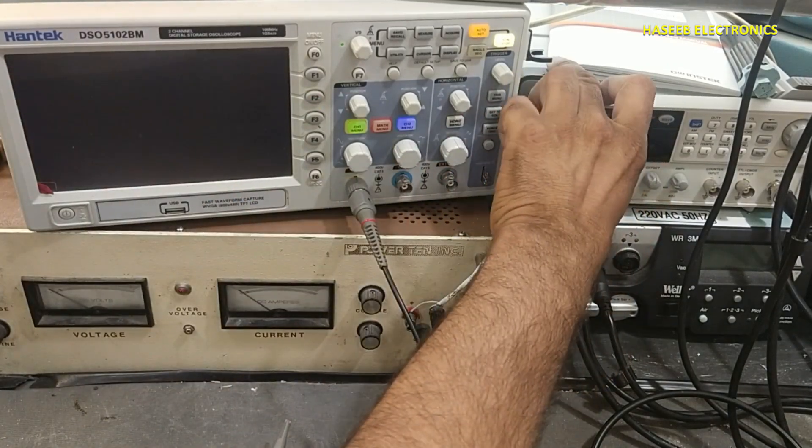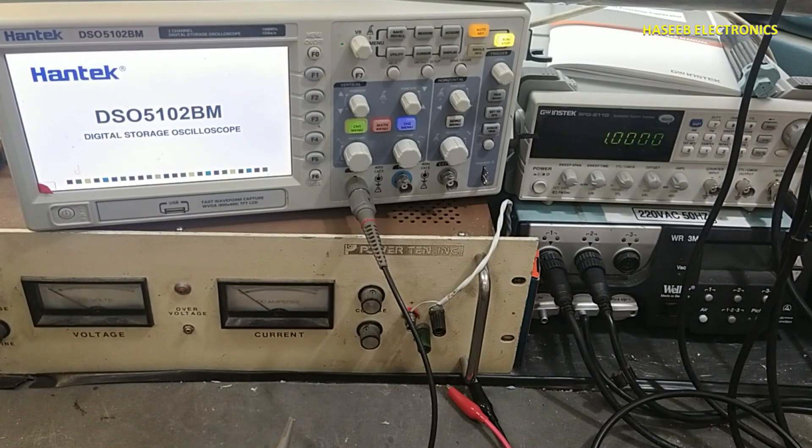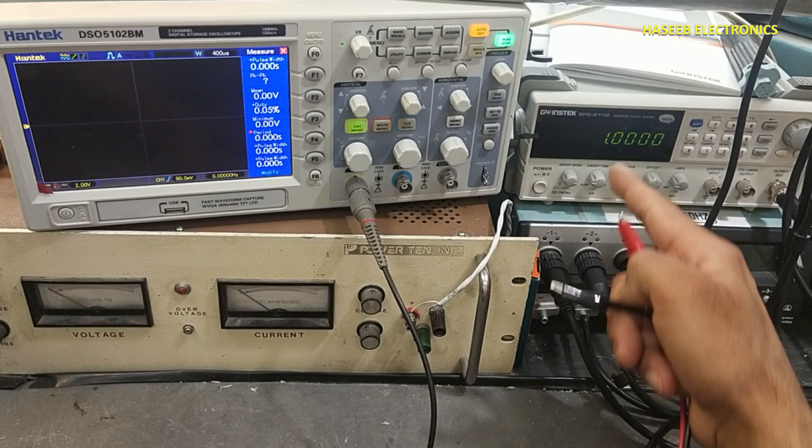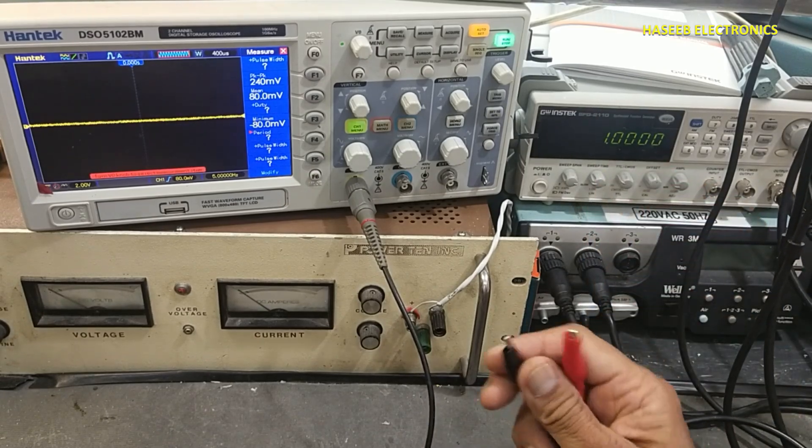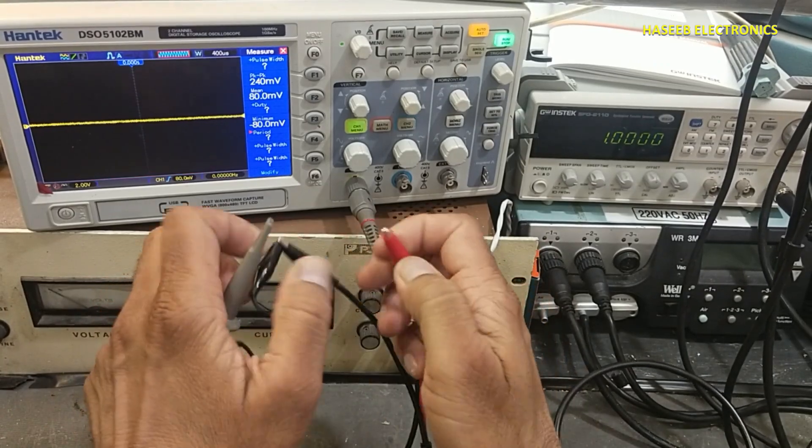Friends, welcome back to my channel. Today we will see what is offset when we measure any AC signal. For example, I have one kilohertz signal here and we check on the oscilloscope.